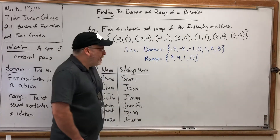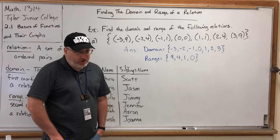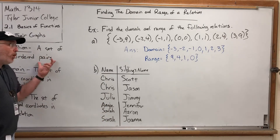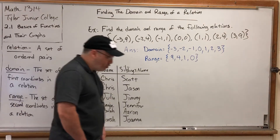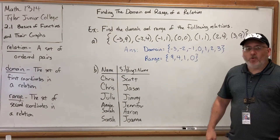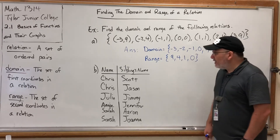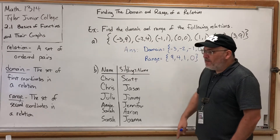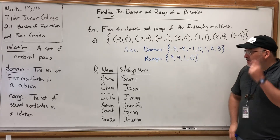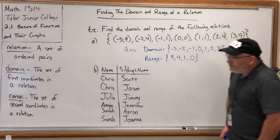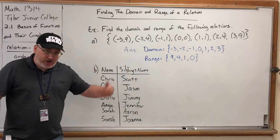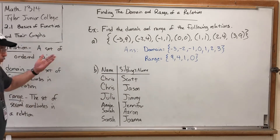You might ask whether there's a reason I paired these numbers together. There is, but the definition of a relation does not require an actual relationship between the first and second coordinates. Can you tell what I did to the first coordinate to get the second? What can you do to negative 3 to get 9, and that same move turns negative 2 into 4, negative 1 into 1, etc.? The answer is: I squared the first coordinate. But again, the definition of a relation doesn't require this — the ordered pairs could just be completely random.